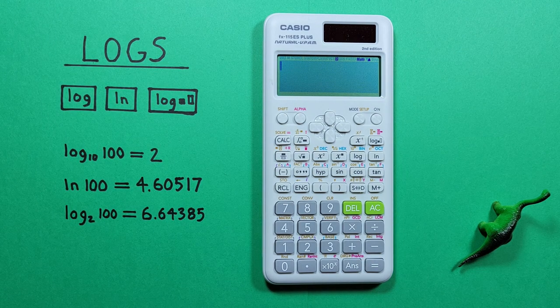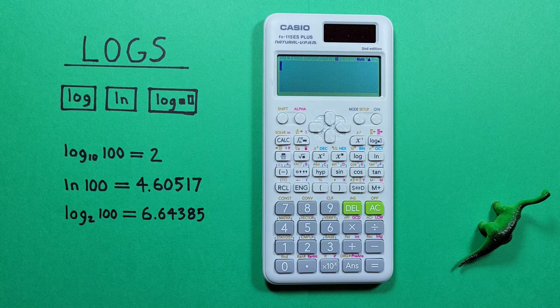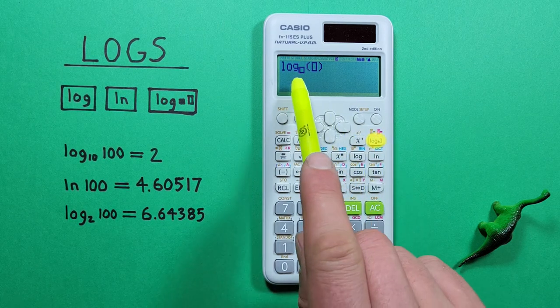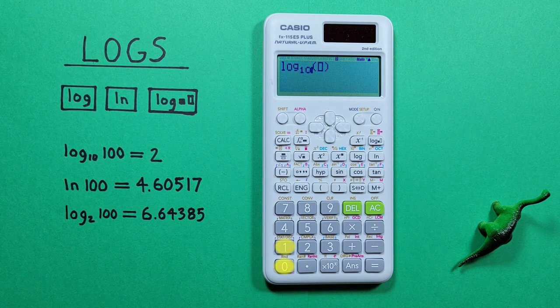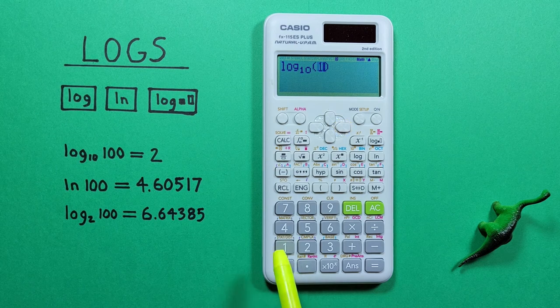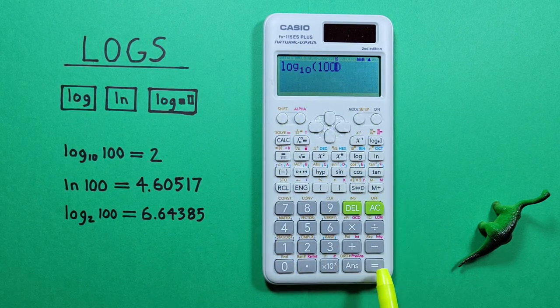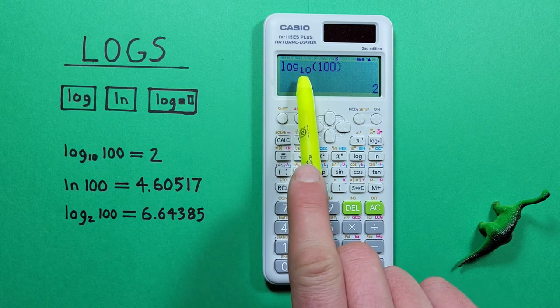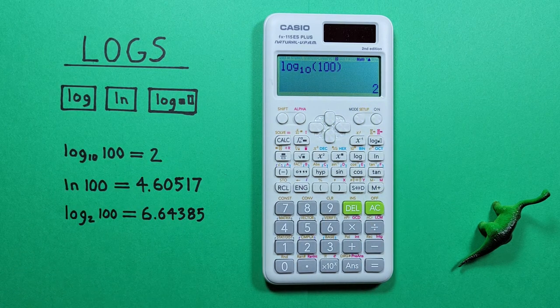We can confirm this works by checking it with our log base 10 of 100. We do that by pressing our log key and then entering a base of 10, scrolling over and entering our 100. So again we have log base 10 of 100 equals, and we get a result of log base 10 of 100 is equal to 2, which is what we got before so we know that works.